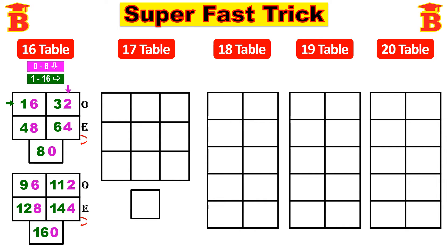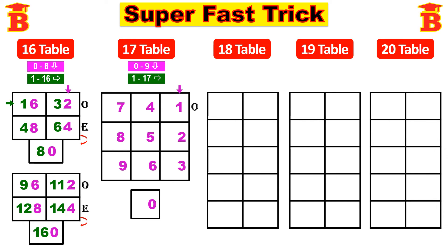Next, 17th table. First step: write 0 to 9 — see the arrow mark, remember in the single box we enter 0, and then start from here: 1, 2, 3, 4, 5, 6, 7, 8, 9. Next step: write 0 to 17, remember odd, even, odd. Start from here horizontally: 1, 3, 5 odd numbers; next 6, 8, 10 even numbers; and then 11, 13, 15 and then 17.